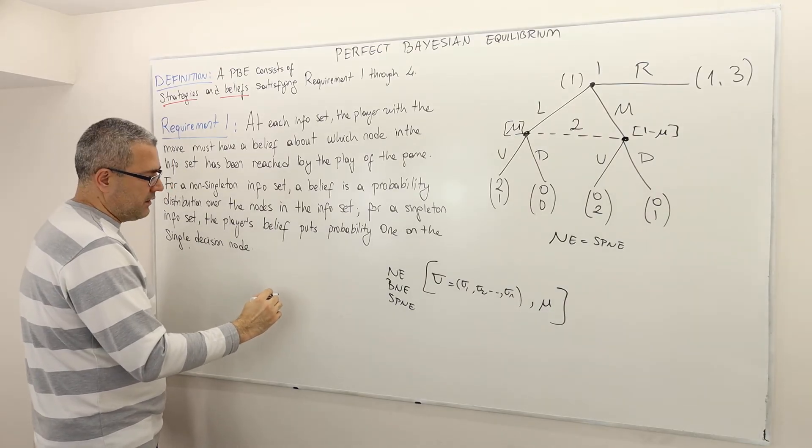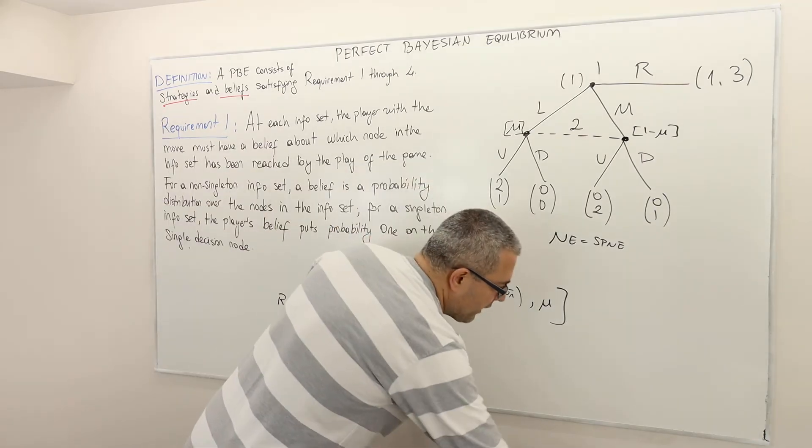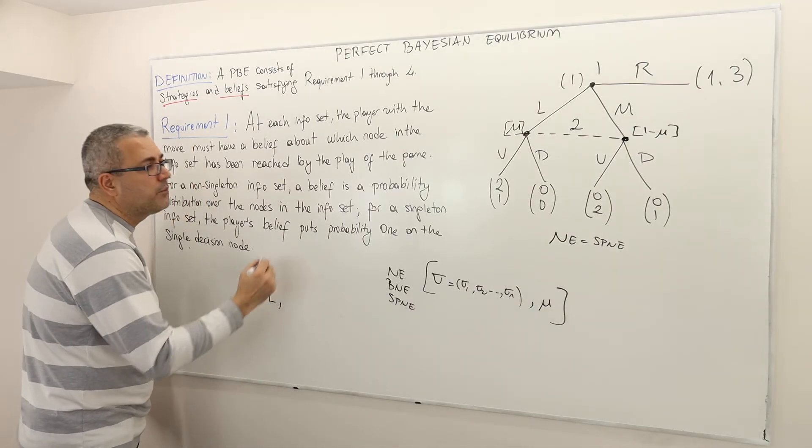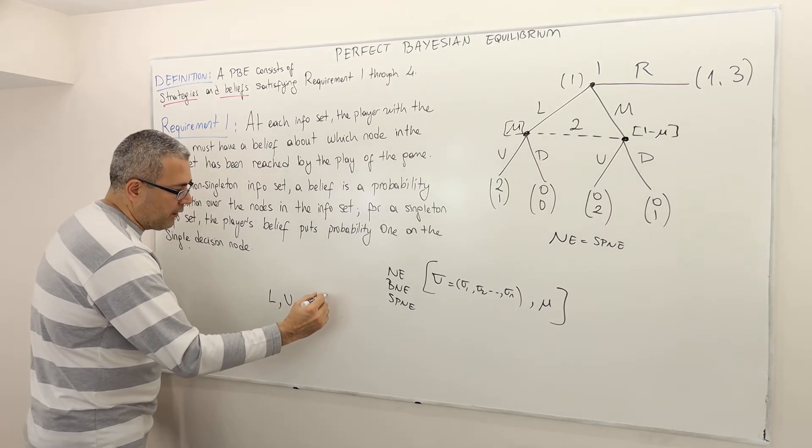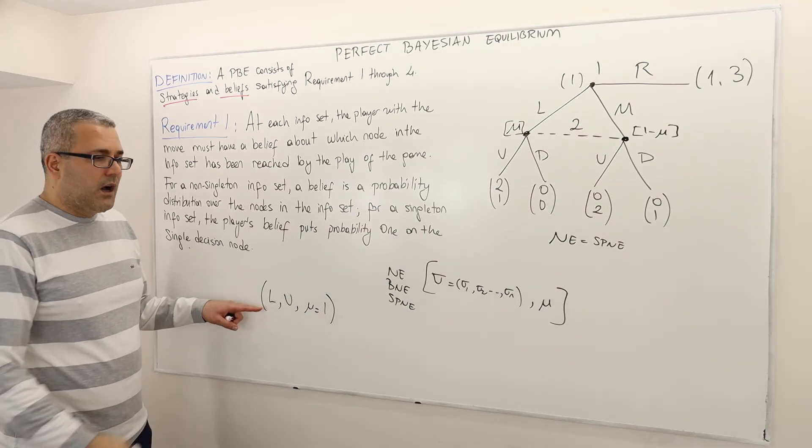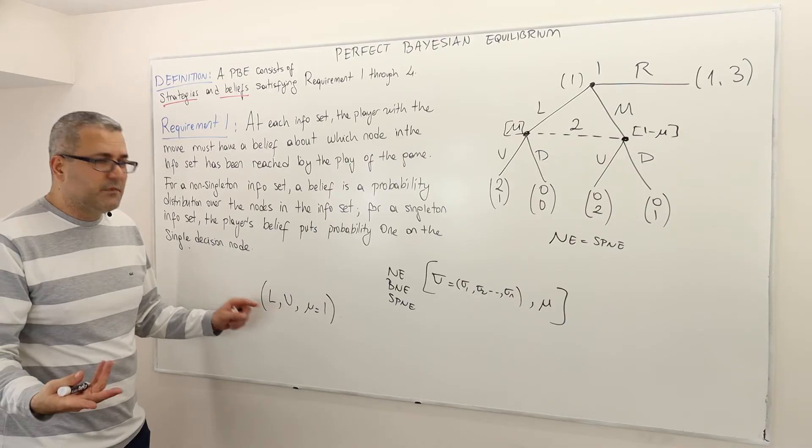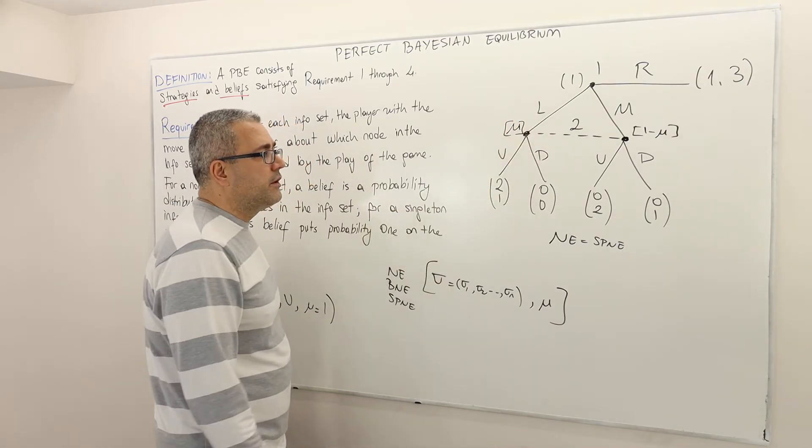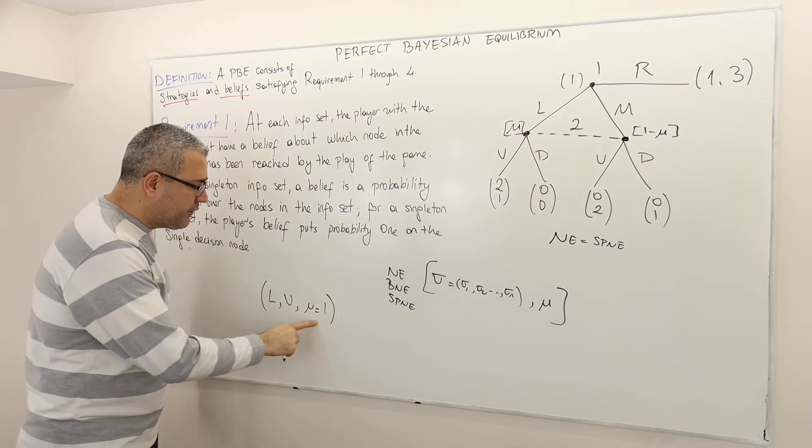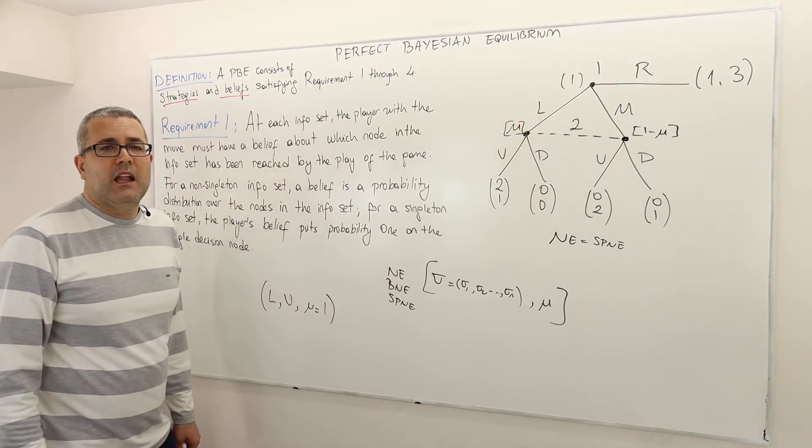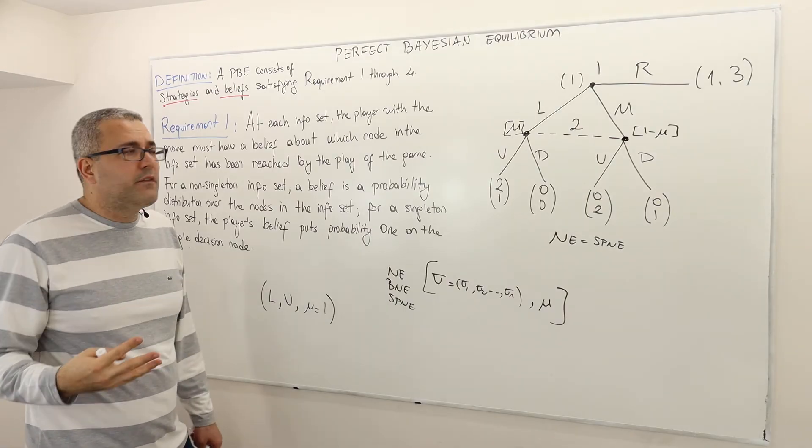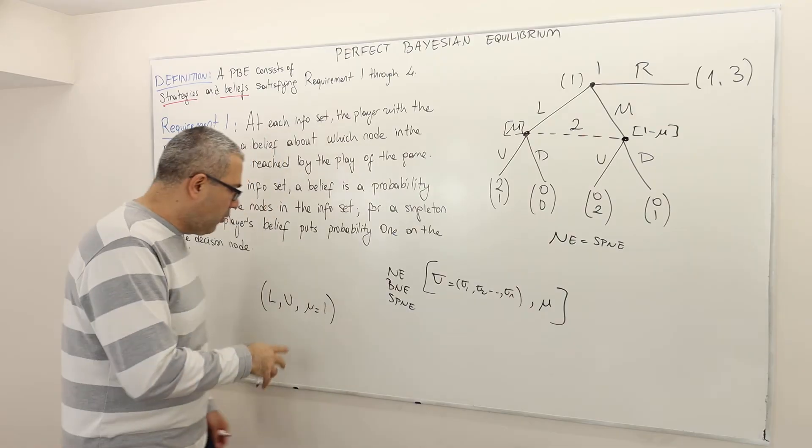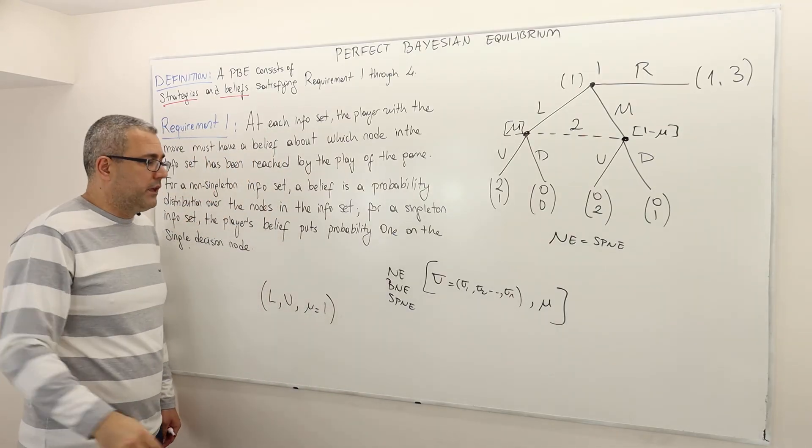So, for example, one sort of example for this specific game: player 1's strategy is R, or let's put it this way. First, a simpler example. Player 1's strategy is L, player 2's strategy is U, and then mu is equal to 1. Alright? So, what does that mean? That means, according to this strategy profile and belief system, player 1 is going to play left, player 2 is going to play U, and player 2 believes that player 1 is going to play L. Alright? So, it makes perfect sense, right? I mean, as if player 2 observes this action of player 1. It doesn't. But it just holds a belief, which happens to be a correct belief.